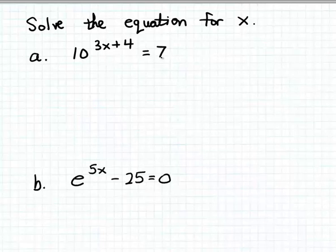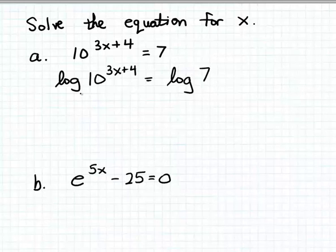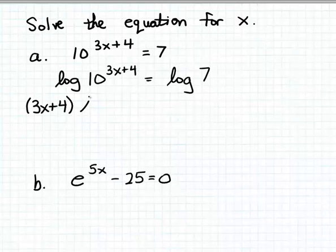The way we're going to do this is by applying a particular log function to both sides of this equation. Since the power on the left hand side has base 10, we're going to apply log base 10, or common log, to both sides. So we have log of 10 to the 3x plus 4 power is equal to log of 7. Now we apply the exponent-to-coefficient property for logarithms, so we get 3x plus 4 times log of 10 is equal to log of 7.